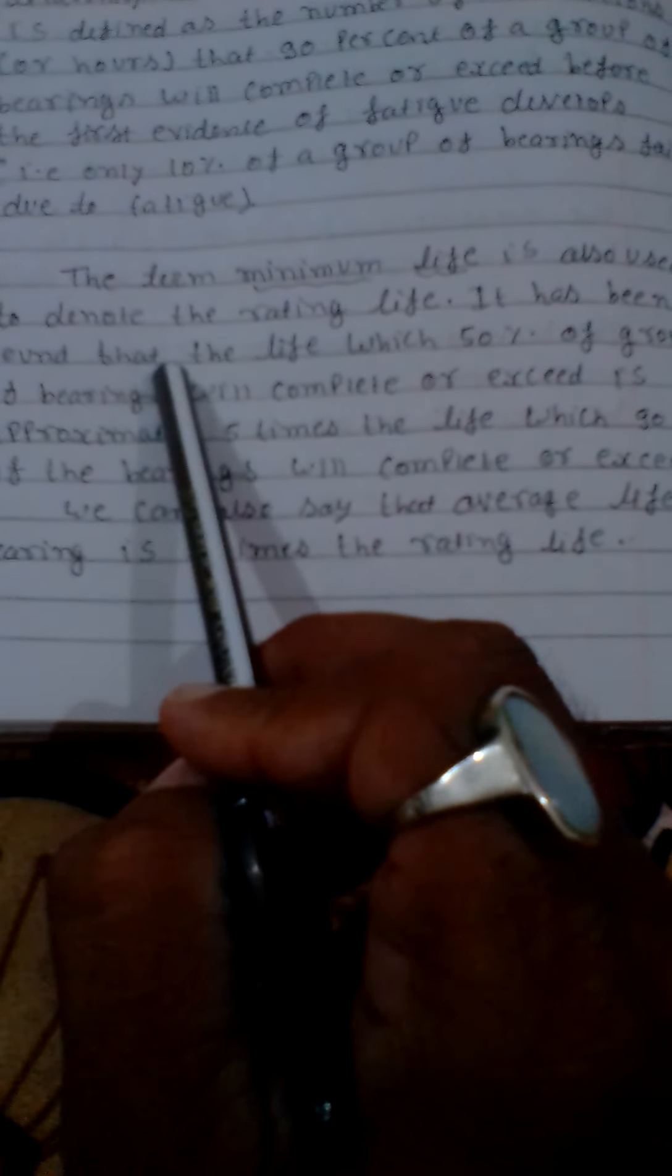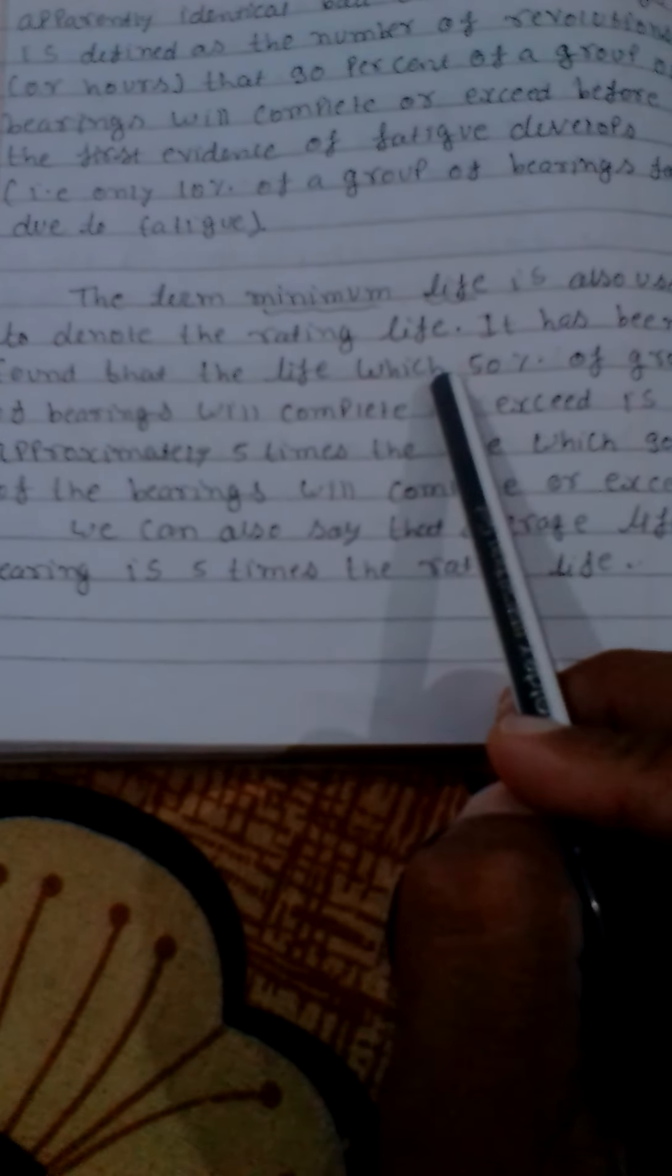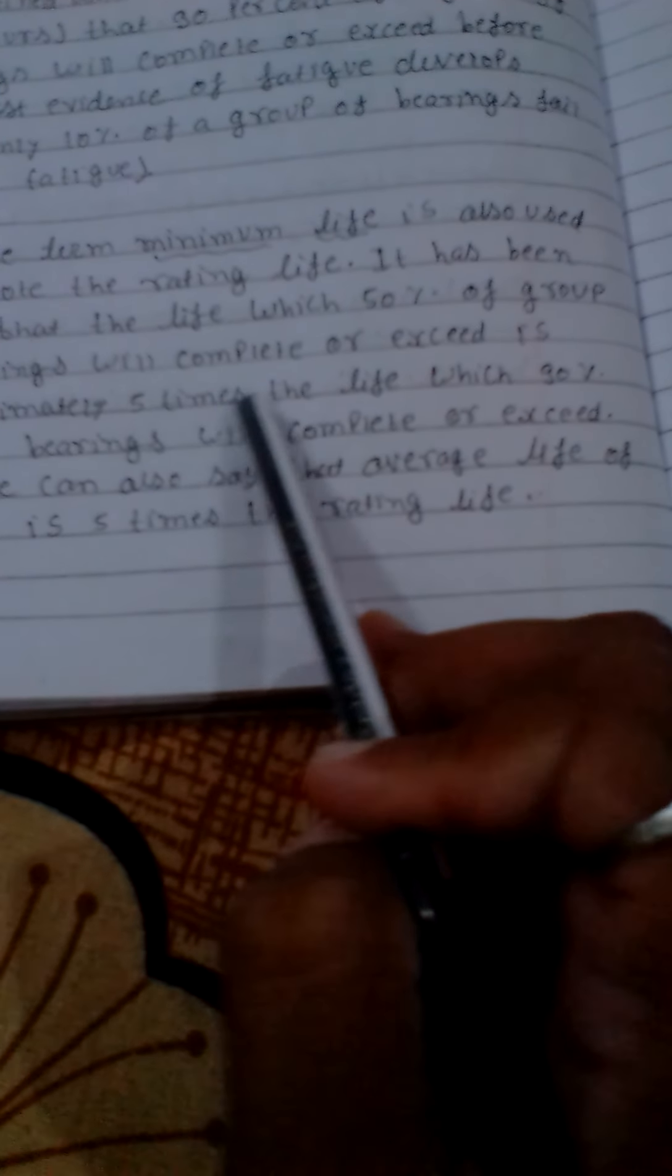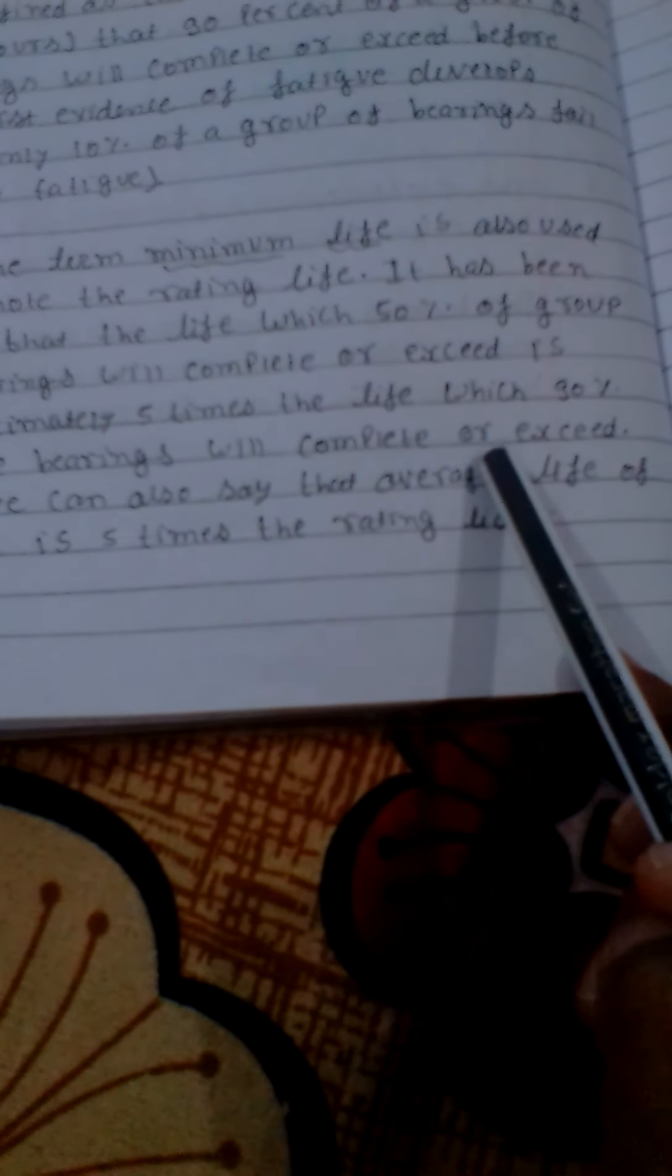It has been found that the life which 50% of a group of bearings will complete or exceed is approximately 5 times the life which 90% of the bearings will complete or exceed.